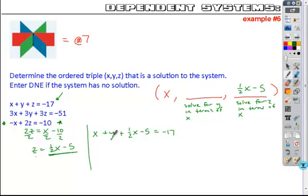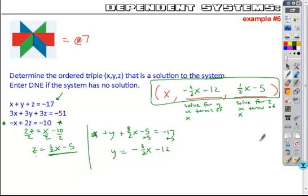Now if I solve this resulting equation for y, I can plug the expression in here. If I combine my x's, one x plus one half x gives me three halves x. I'm going to subtract that, move it over to the other side. I'm going to add five to both sides, so here I get minus 12. There is my y value: negative three halves x minus 12. And so this would be my answer for this dependent system.